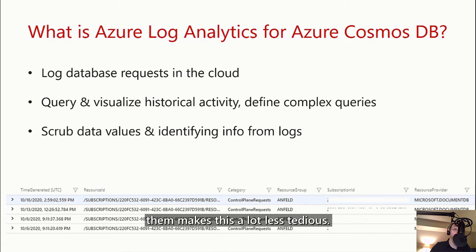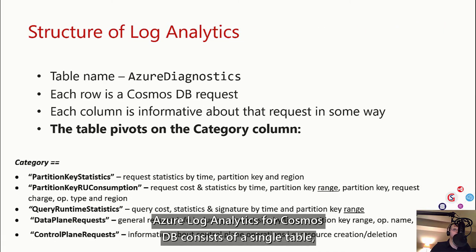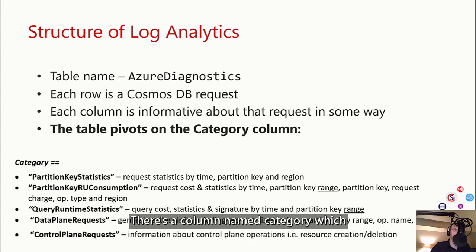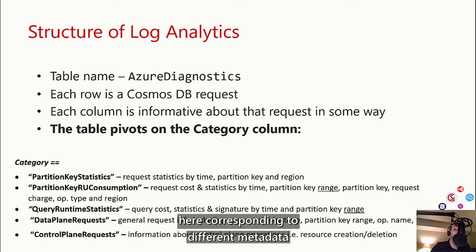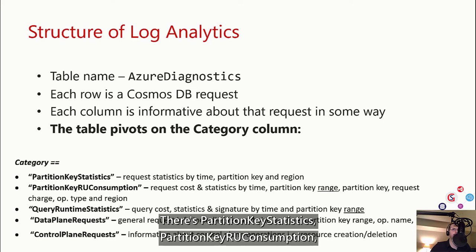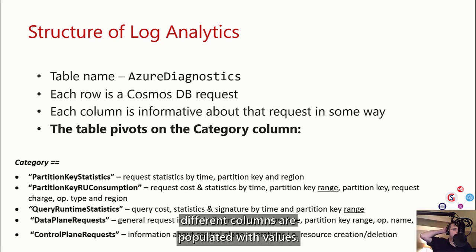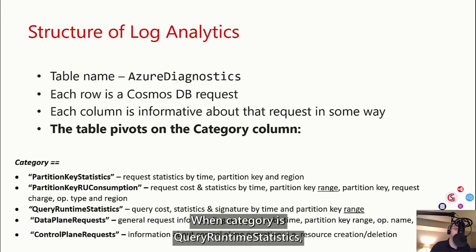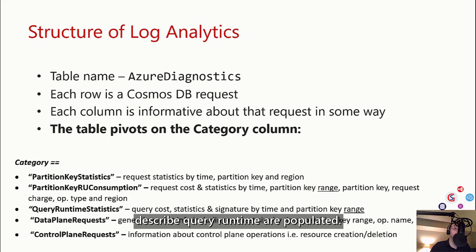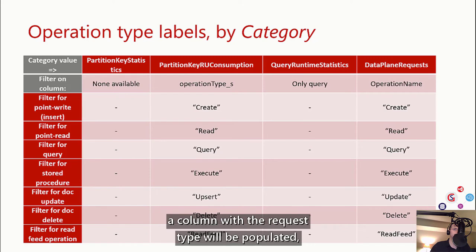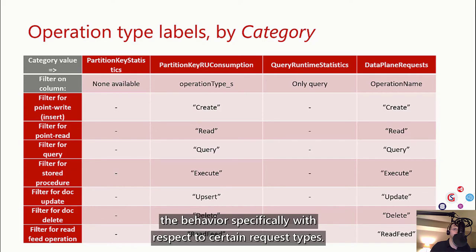The table pivots on the category column — depending on what the value of category is, different columns are populated with values. For example, when category is Partition Key Statistics, columns related to Partition Key Statistics are populated in that row. When category is Query Runtime Statistics, only the columns needed to describe Query Runtime are populated. For the Partition Key RU Consumption and Data Plane Requests categories, a column with the request type will be populated, and you can leverage that in your queries to understand behavior specifically with respect to certain request types.